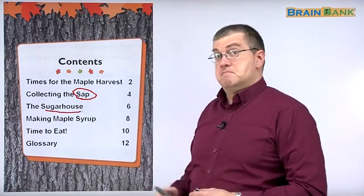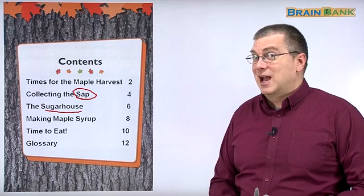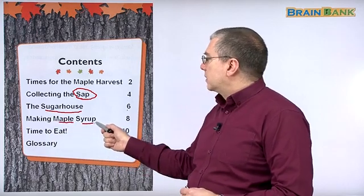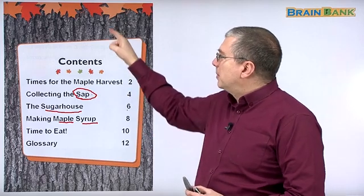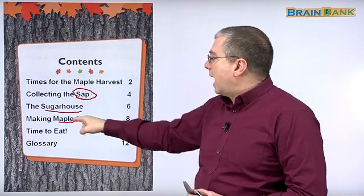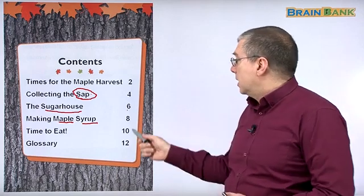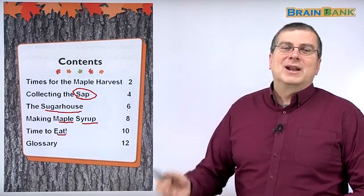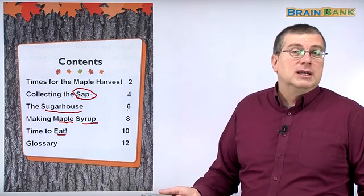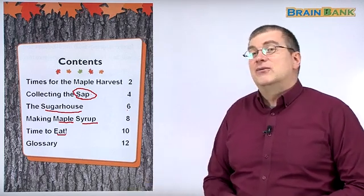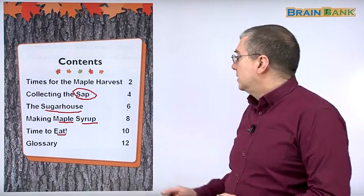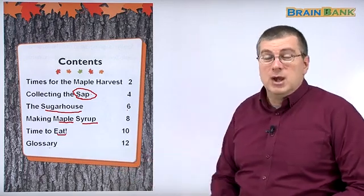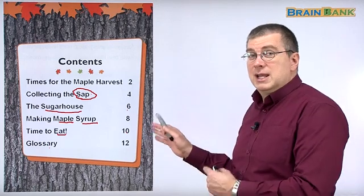Then we see the sugar house. That looks interesting — the sugar house. That's a house where they have sugar. We'll learn about that on page six. Then we'll see how they make maple syrup. Of course, it has something to do with the sap — the juice inside the maple tree. How do they make maple syrup? We'll find out on page eight. Then we'll have a fun chapter: time to eat! What can we eat with maple syrup? What kinds of food can we make with maple syrup? We'll find that out on page ten. And at the end of the book, we have our glossary, where we can review the important words we learned in this book.